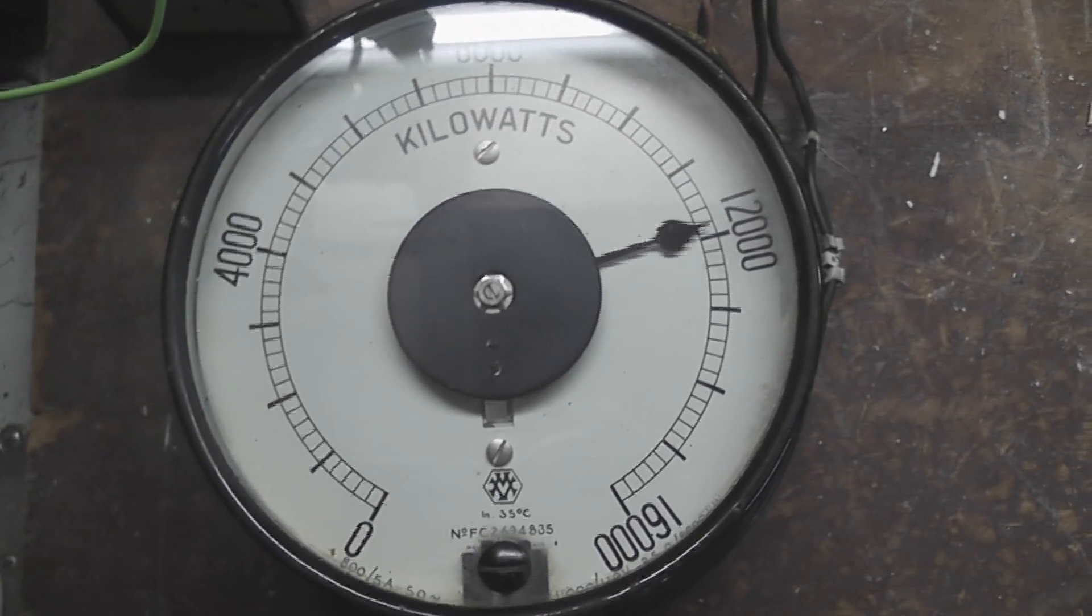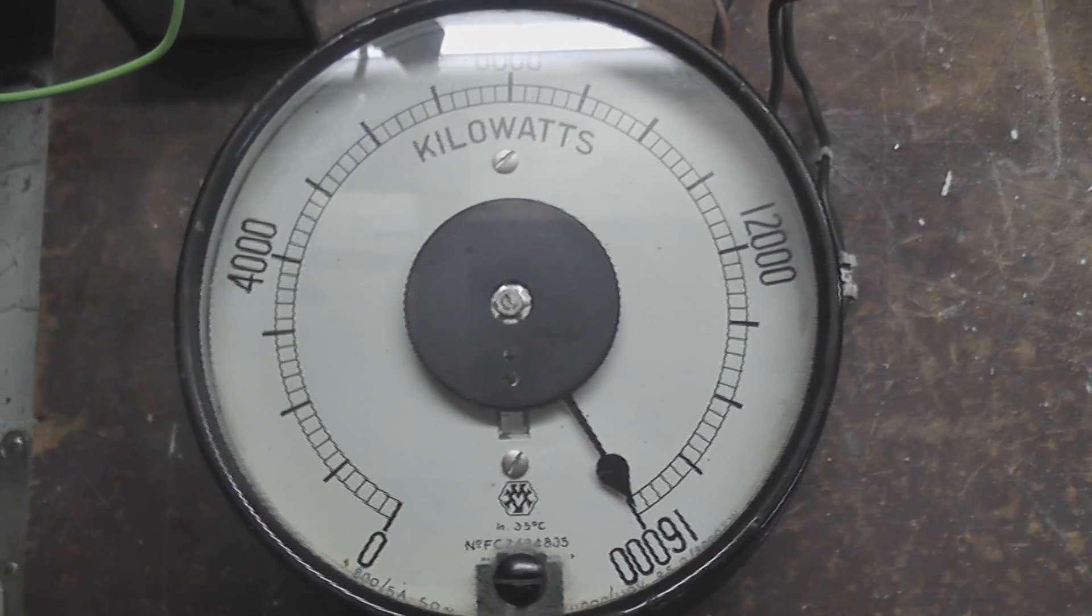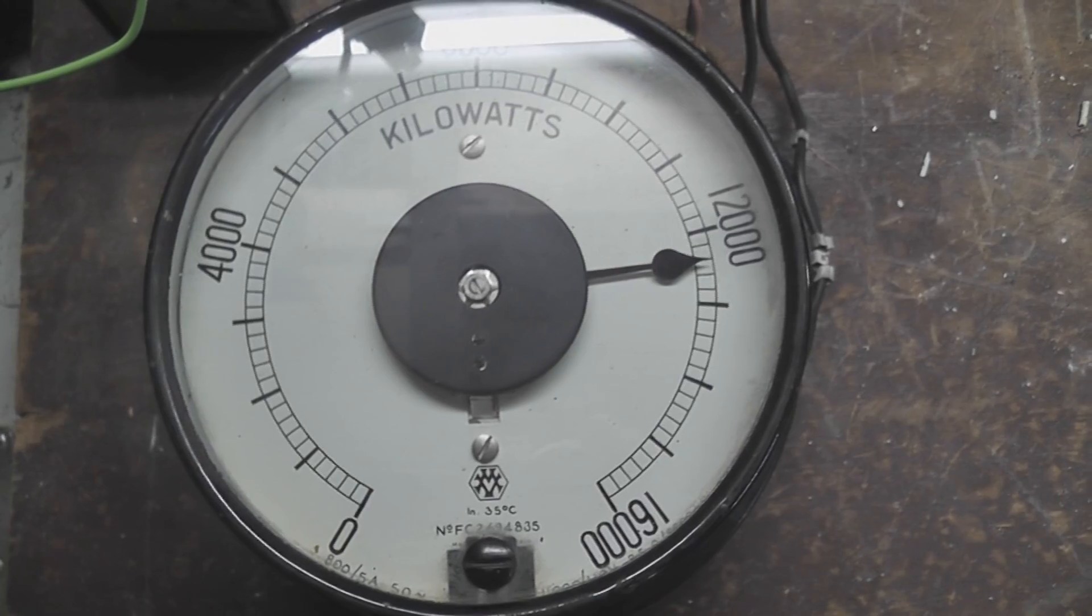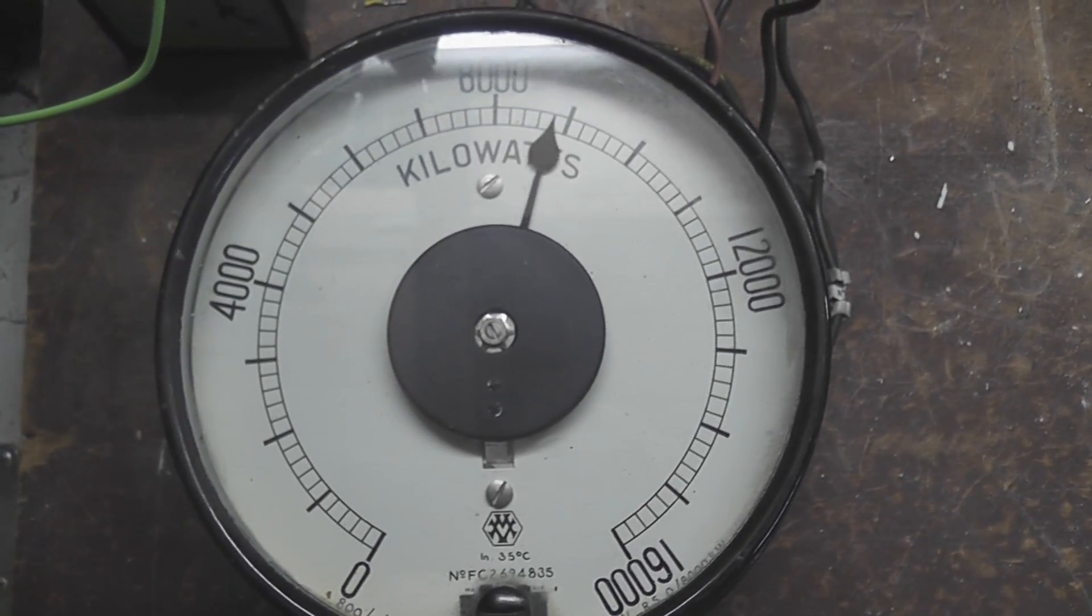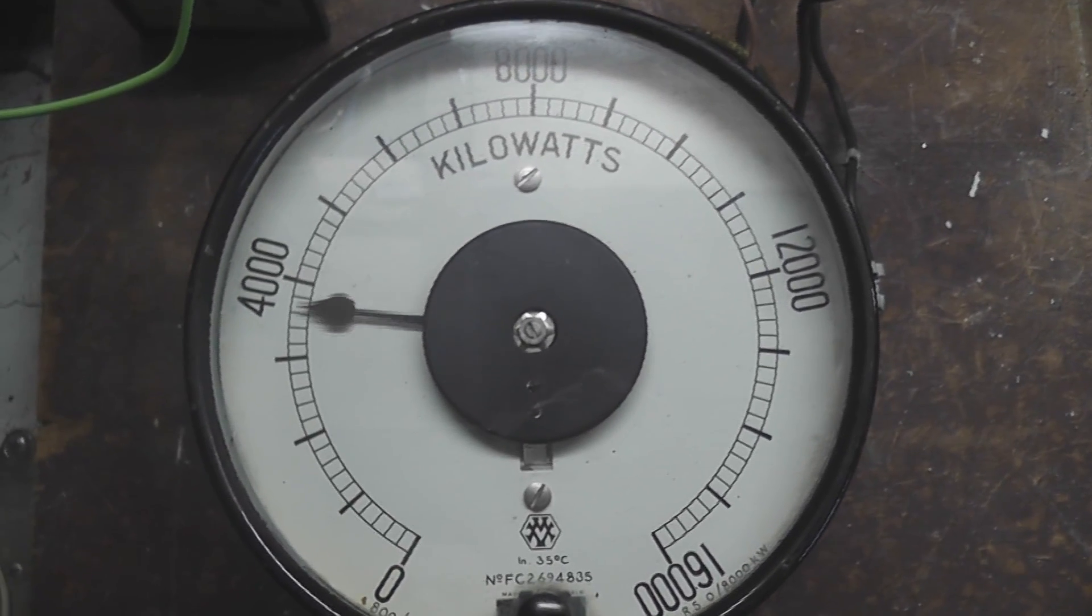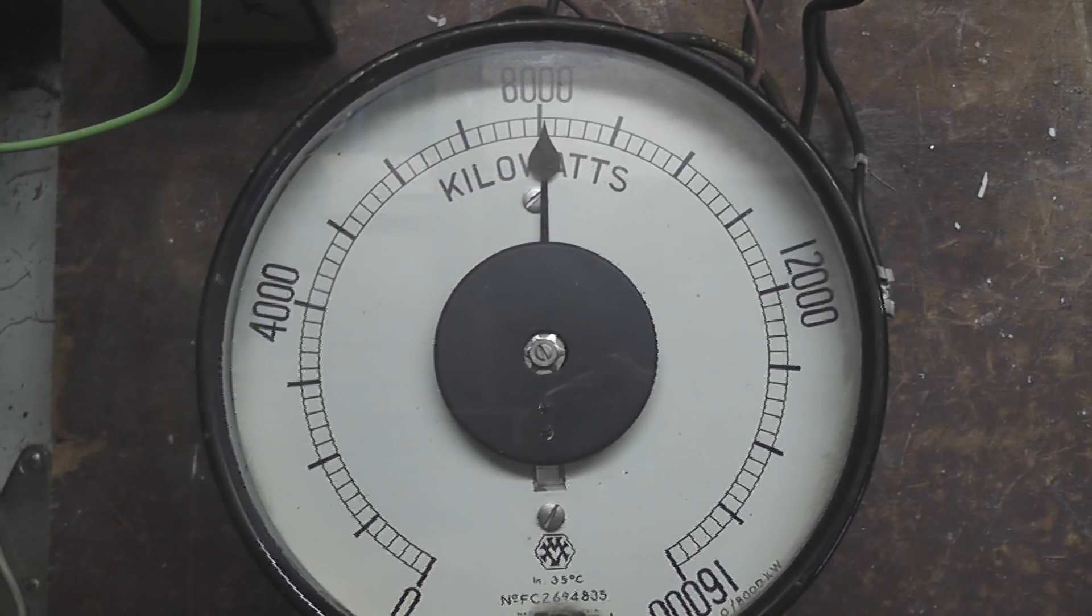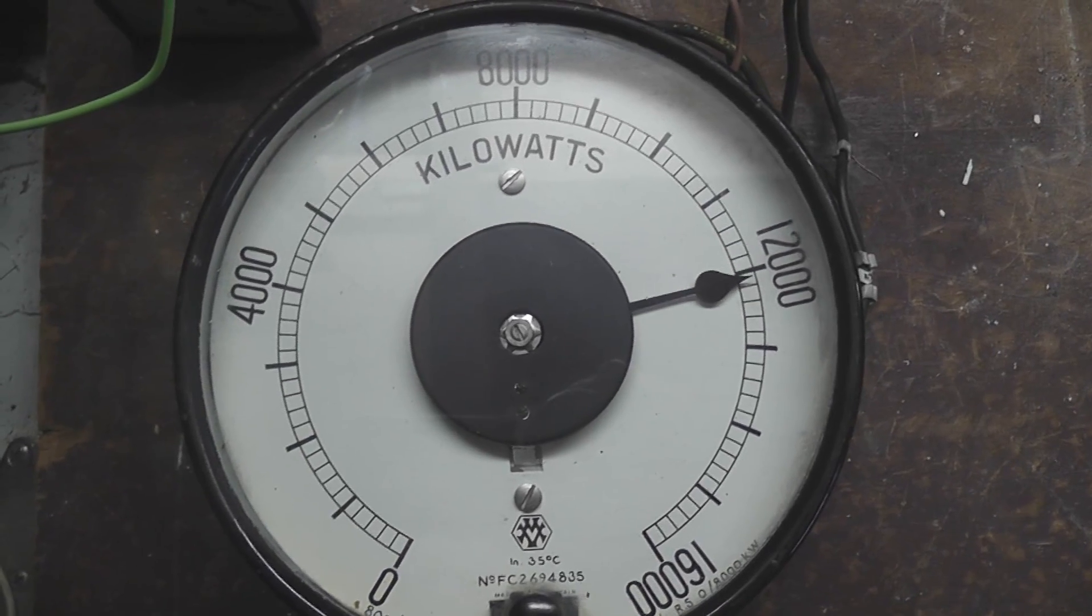I know it's a wattmeter with 110 volt potential coils. I'm just going to build it in one of my control boxes and calibrate it for kilowatts. Get a suitable ratio CT current transformer and get it to read like four thousand for four kilowatts, eight thousand for eight kilowatts and so on. That's the plan. I'll see what happens.